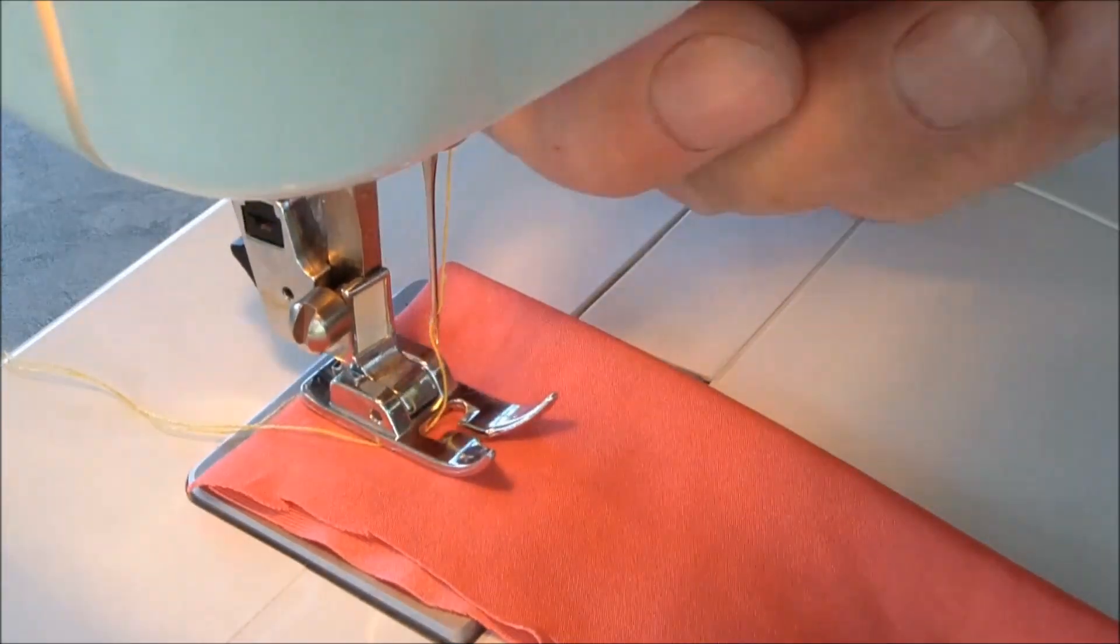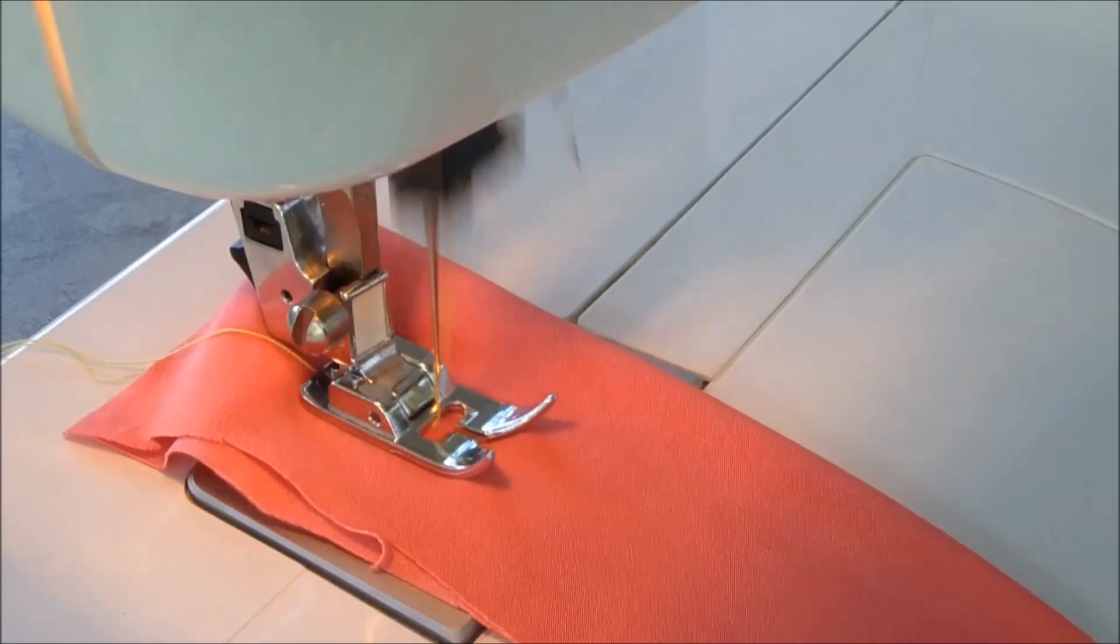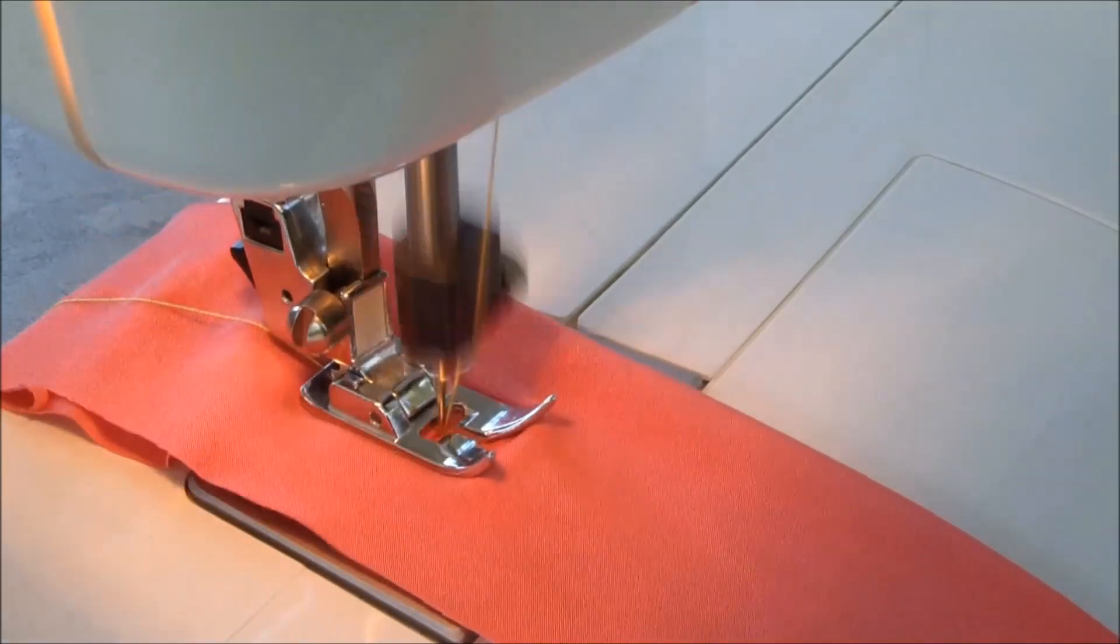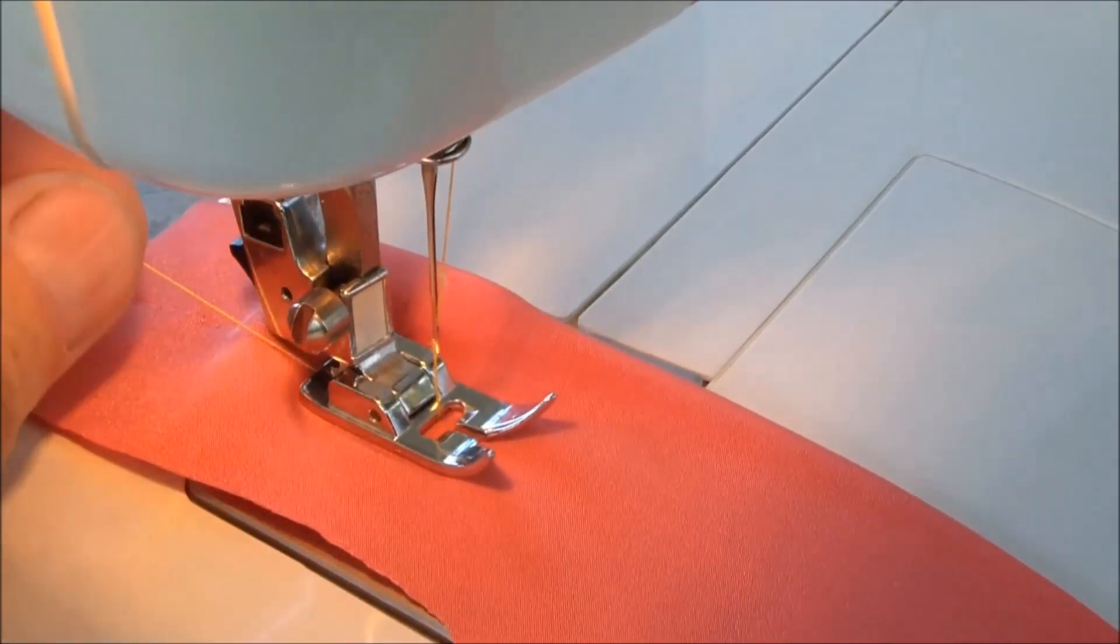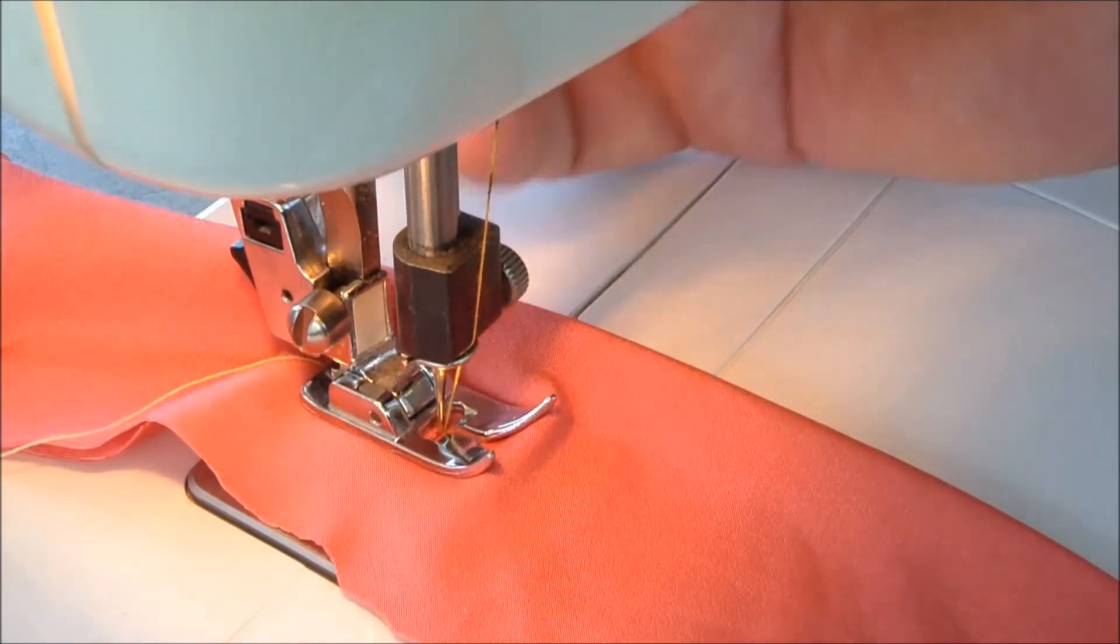But a main reason why sewing machines sew knitted fabrics poorly is incorrect position of the needle blade relative to the hook tip. In this video we will show how to set this parameter so that the sewing machine will sew any fabric without problems.